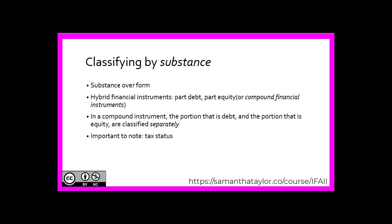When classifying financial instruments, we are concerned with the substance of the transaction, not the legal form. Recall from a previous chapter the concept of substance over form — what does this really look and feel like, not what the lawyers or the bankers are calling it. Pure debt and pure equity instruments are fairly straightforward to classify, but there are instruments that are part debt and part equity, called hybrid or compound financial instruments.